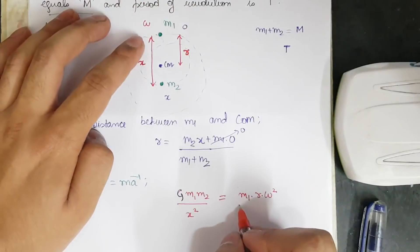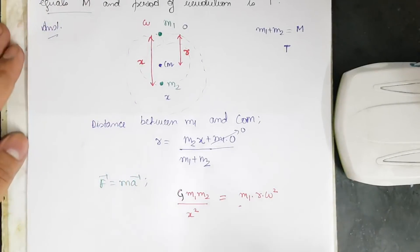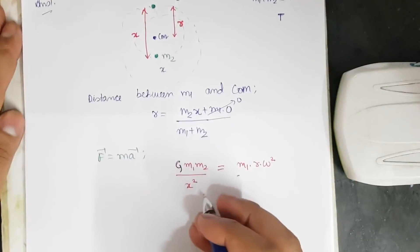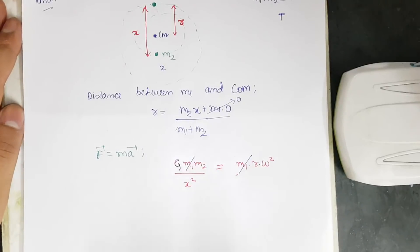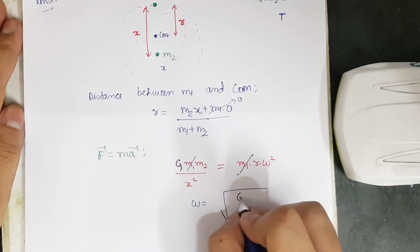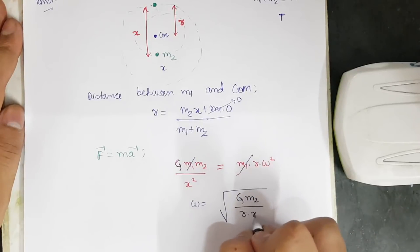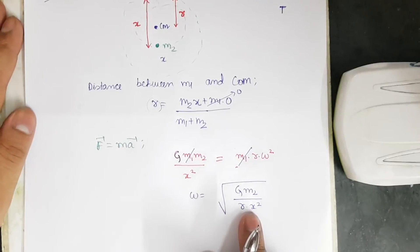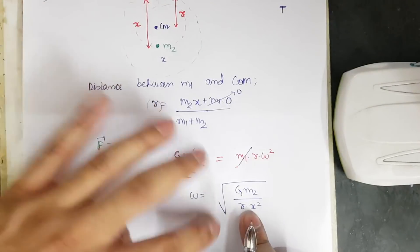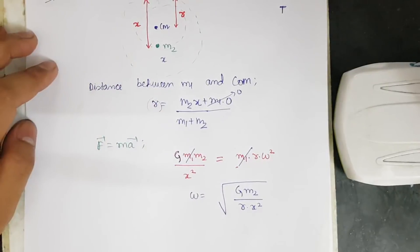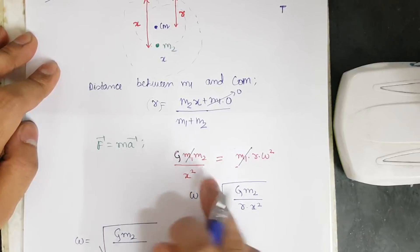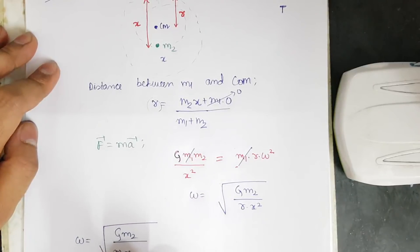Cancelling m1 from both sides, we get ω = √(G·m2 / (r·x²)). Now substituting the value of r = m2·x / (m1 + m2) into this expression, ω = √(G·m2 / ((m2·x/(m1+m2))·x²)), which simplifies as the m2 terms cancel.